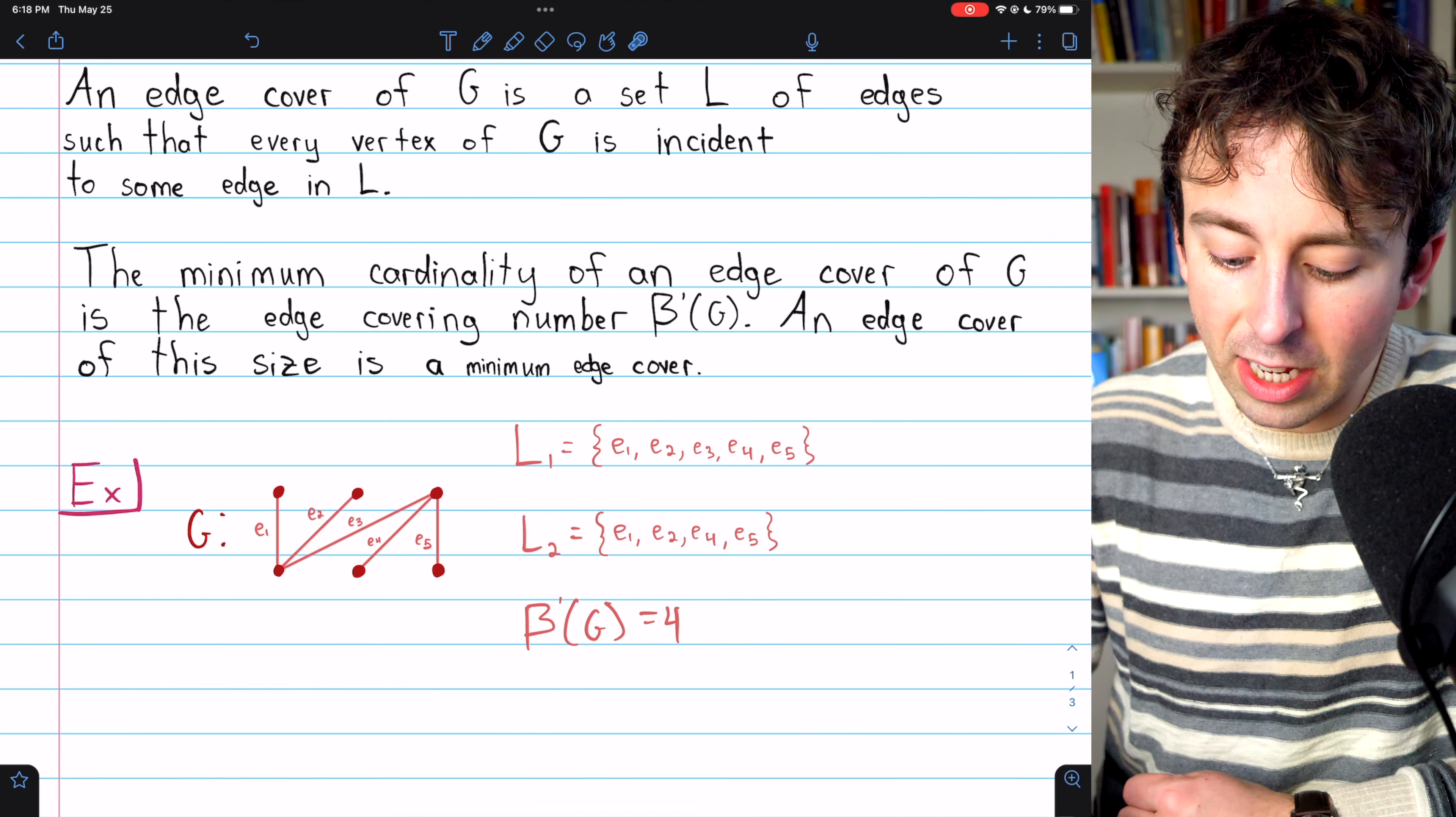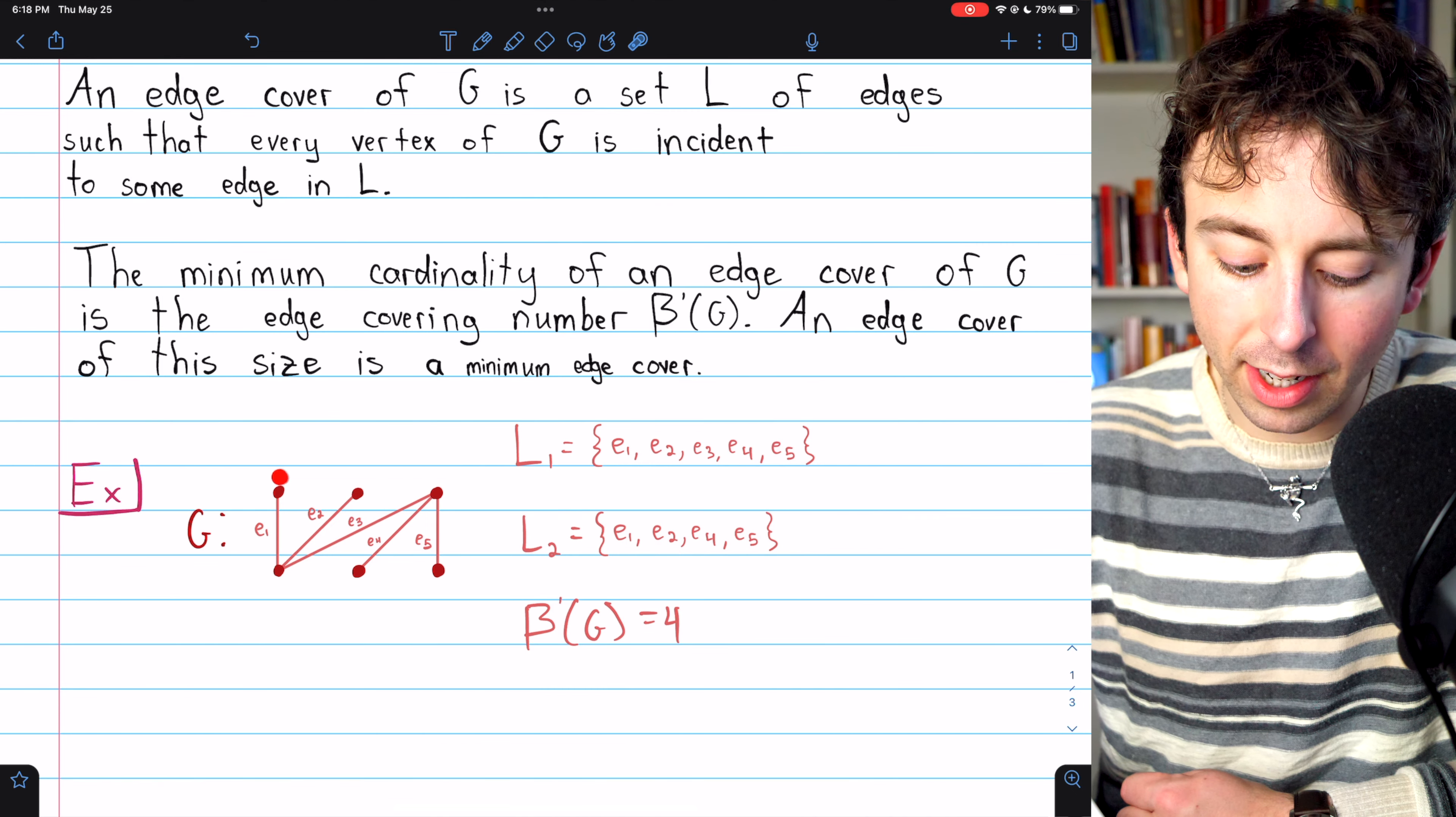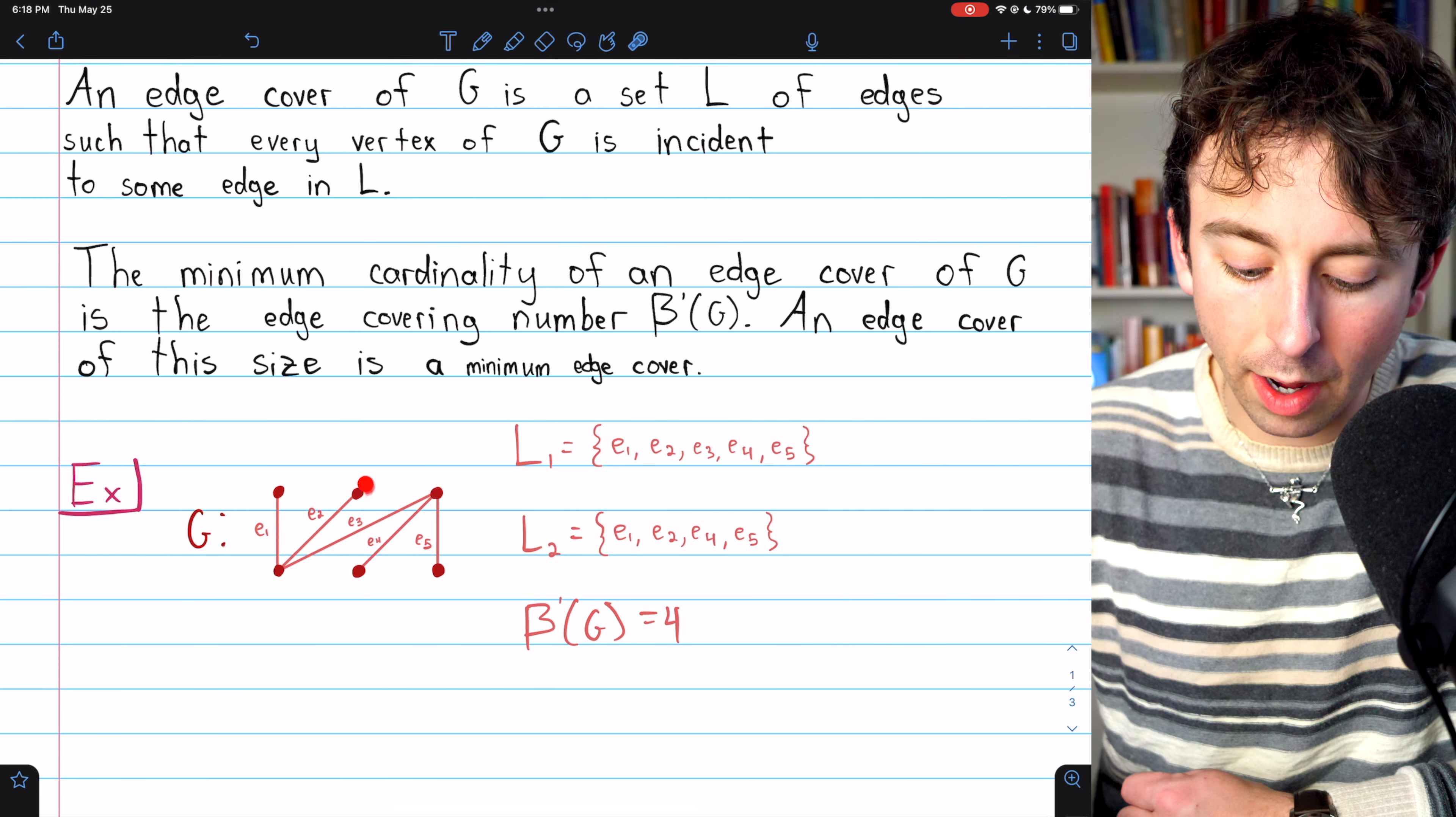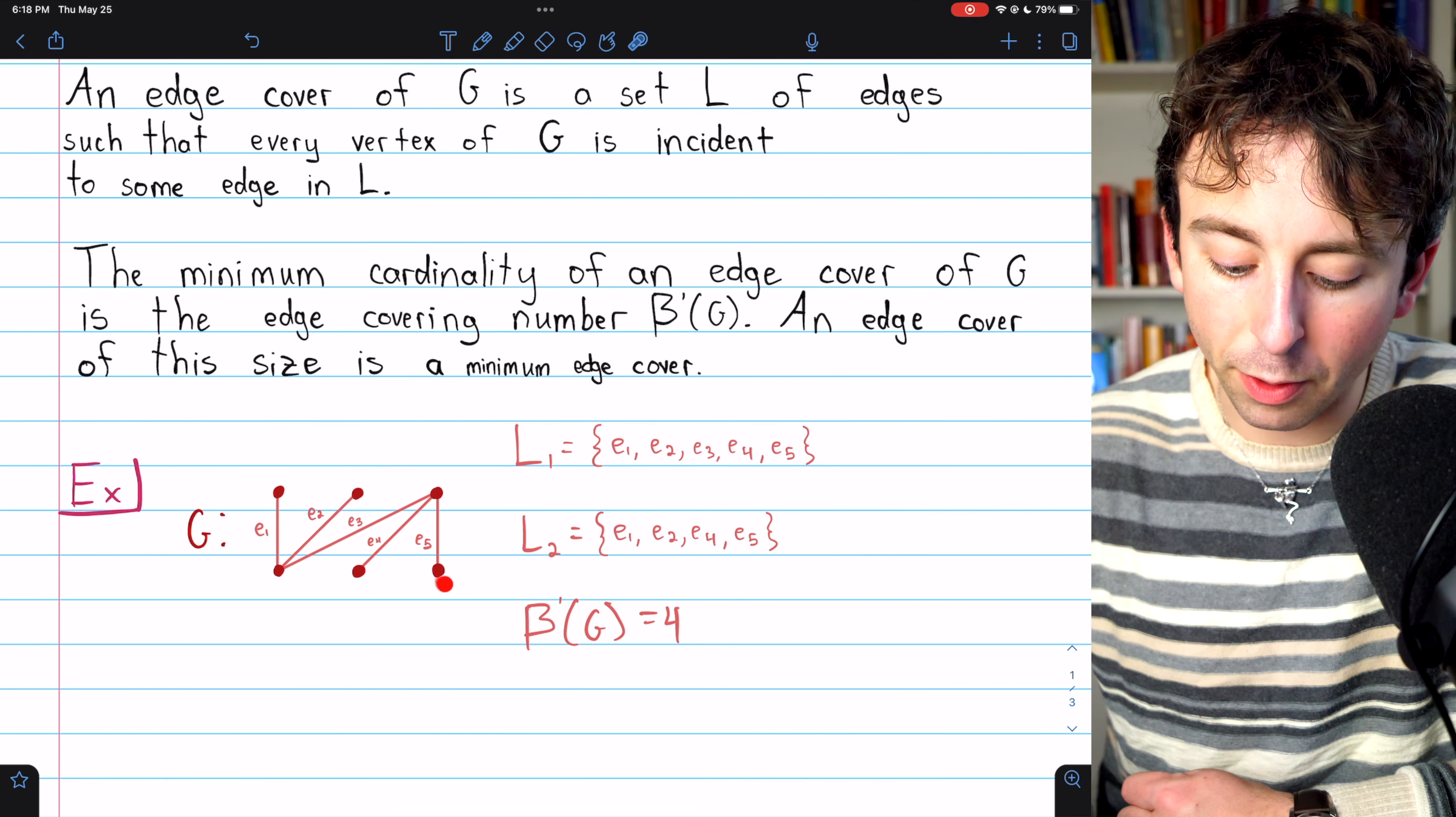In this case, it's actually quite easy to see that this is a minimum edge cover, because for sure we need the edge E1 to cover that vertex. There's no other option. Similarly, we need E2 to cover that vertex, we need E4 to cover that vertex, and we need E5 to cover this vertex.